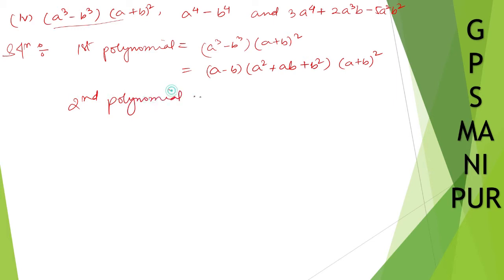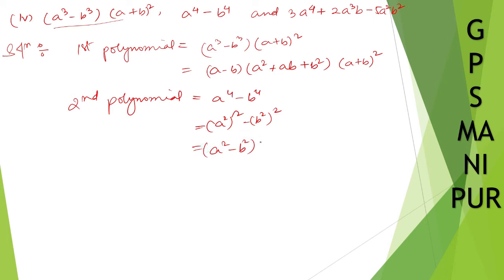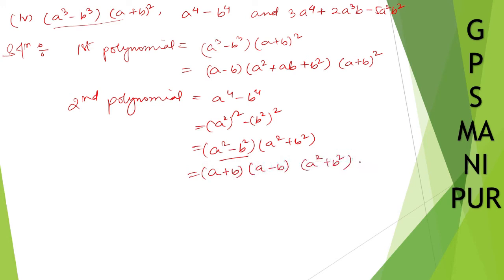Second polynomial is a to the power 4 minus b to the power 4. I can write this as (a square) whole square minus (b square) whole square, which factors as (a square minus b square)(a square plus b square). Then (a square minus b square) further splits as (a plus b)(a minus b), giving us (a plus b)(a minus b)(a square plus b square).